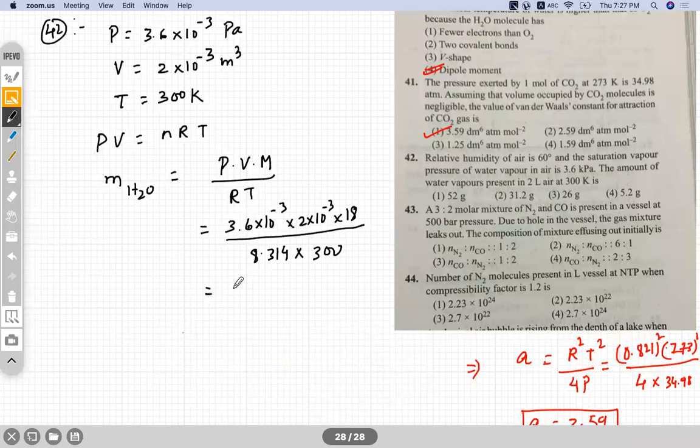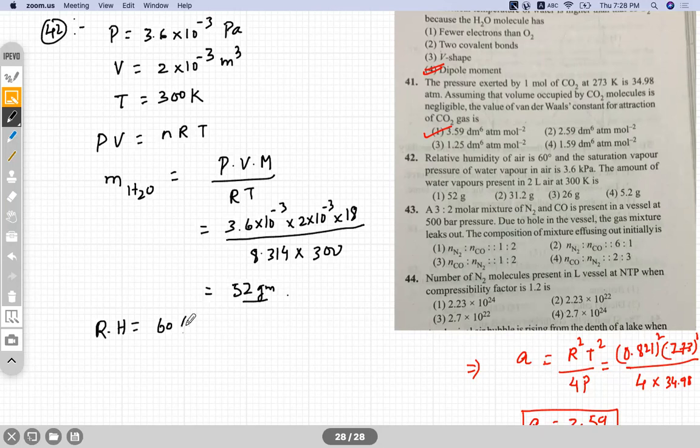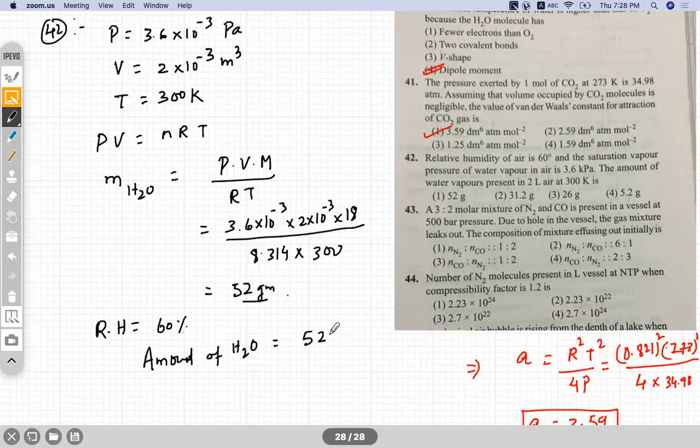So when you solve this, the mass you will get around 52 gram. Relative humidity is given, RH is 60 degree, that is 60% is the limit relative humidity we have. So the amount of H2O in this sample is 52 times 0.6, 60 by 100, that is 31.2 gram.